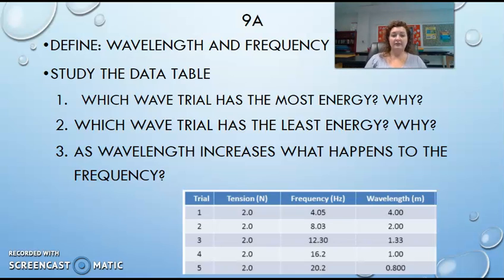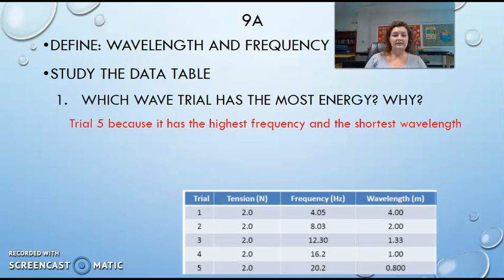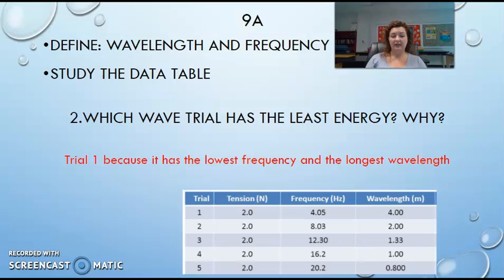So we're going to look now at these questions that are on your sheet together. We're going to do one at a time. Which wave trial has the most energy and why? If you're looking at the data table, you can see that it's going to be trial five, because it has the highest frequency and the shortest wavelength out of all the trials. Number two says, which wave trial has the least energy and why? It's trial one, because it has the lowest frequency and the longest wavelength.